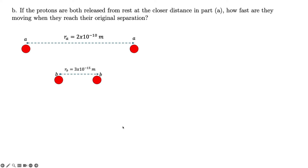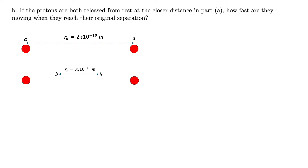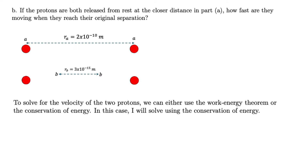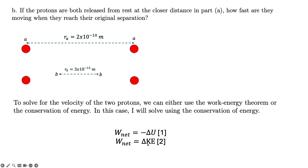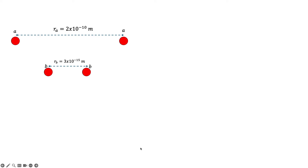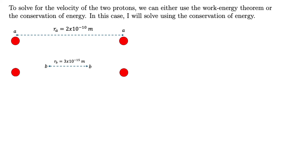For the second problem, if the protons are released from rest at the closer distance of 3×10⁻¹⁵ meters, we need to find how fast they are moving when they reach their original position at point A. To solve for velocity, we can use the work-energy theorem or conservation of energy. Here, we will use conservation of energy, though both approaches are equivalent.